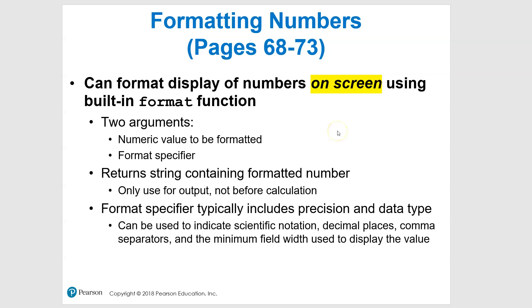So that means when you're using the print function and you want it to output onto the screen, at no time do we want to alter the actual number that's being stored by the computer. This is display only, as you'll see in a second. We have a built-in format function — thank you, Python for this. We have two things: the value that's going to be formatted and the format specifier. It returns an actual string that contains the formatted number, and you can only use it for output.